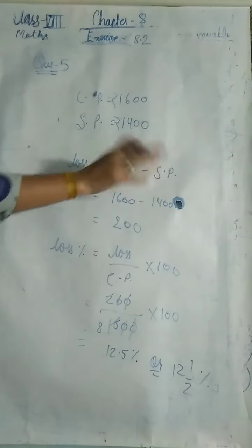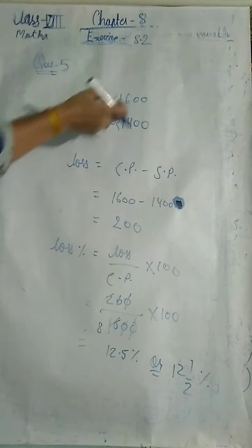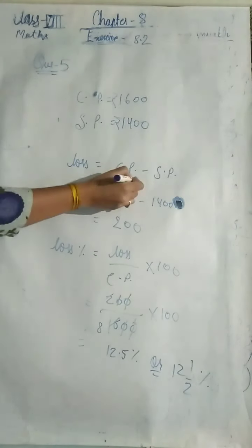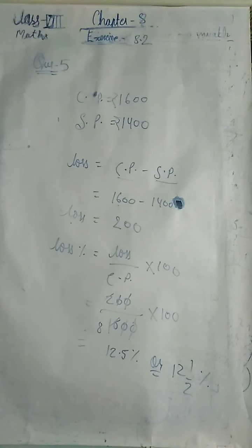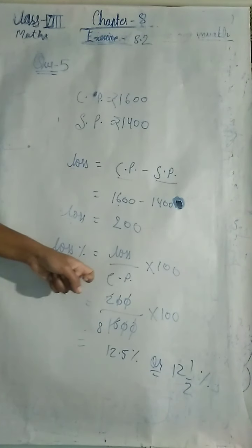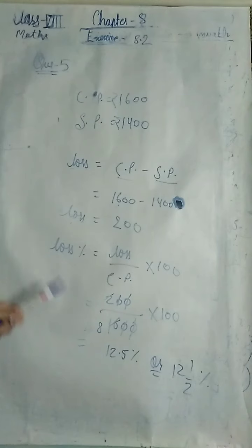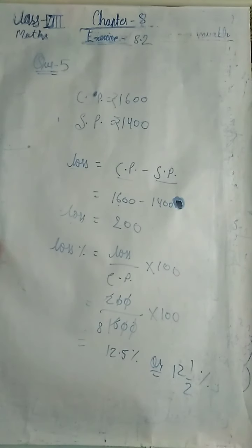Loss = CP − SP = 1600 − 1400 = Rs. 200. Loss percentage = (Loss / CP) × 100 = (200 / 1600) × 100 = 12.5%, i.e., 12½%. This formula was given to you in a previous class; check your notes.